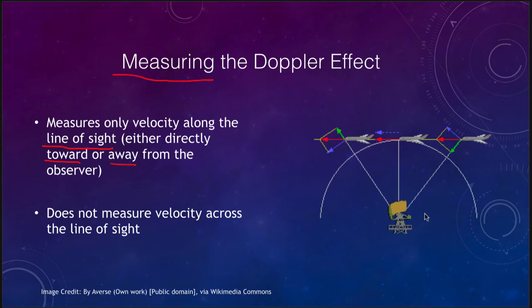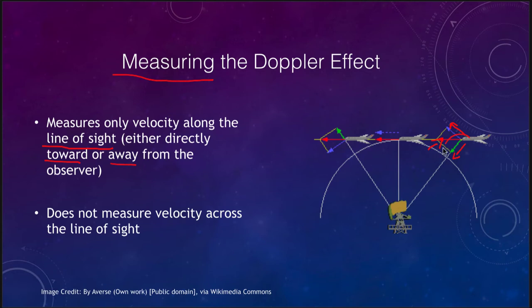If we look at the example here with an airplane, the green arrow shows the part of the velocity that is moving towards the observer. The blue arrow shows the part of the velocity that is moving along the line of sight, and the middle arrow shows the actual true velocity of the plane through the sky.